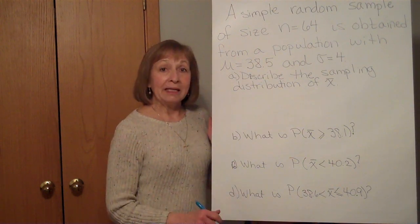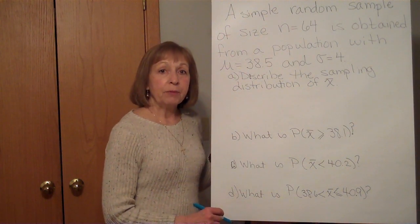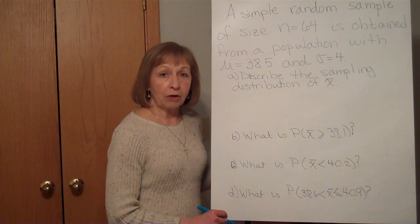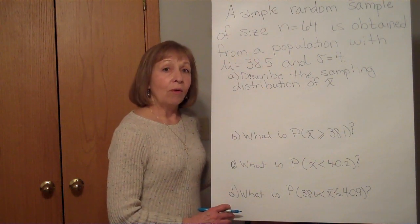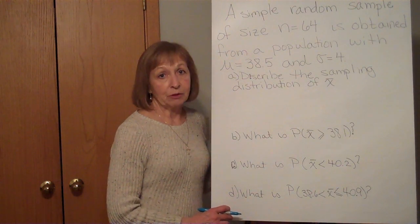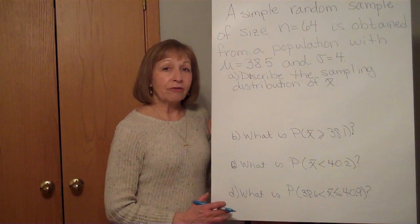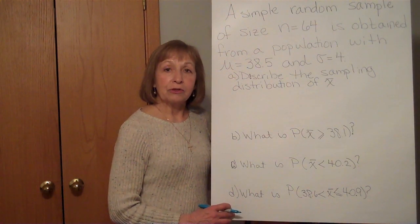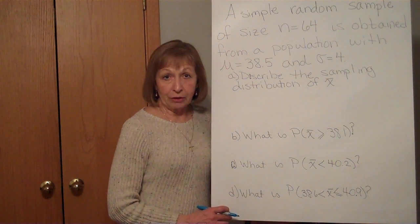With the sample mean sampling distribution, the shape of the sample means will be normal if the individual numbers had a population whose distribution was normal, or if your sample size is large even if you don't know what the distribution of the individual numbers was. Large for this scenario is if your sample size is 30 or more.